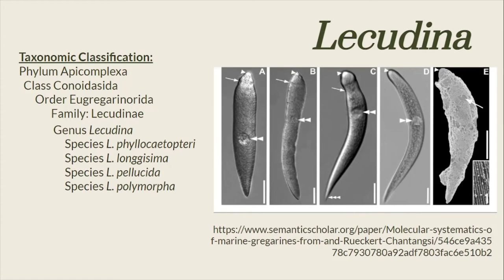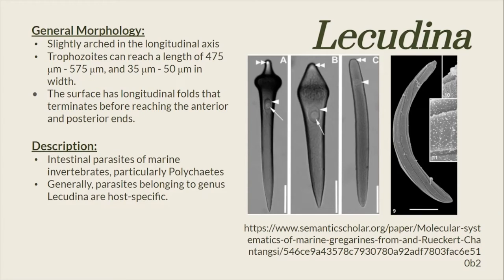Next, we have the genus Lesudina. Species from the genus Lesudina are intestinal parasites of marine invertebrates, particularly of polychaetes, and are generally host-specific. They are slightly arc in the longitudinal axis. Trophozoites can reach a length of 475 to 575 micrometers and 35 to 50 micrometers in width. The surface has longitudinal folds that terminate before reaching the anterior and posterior ends.